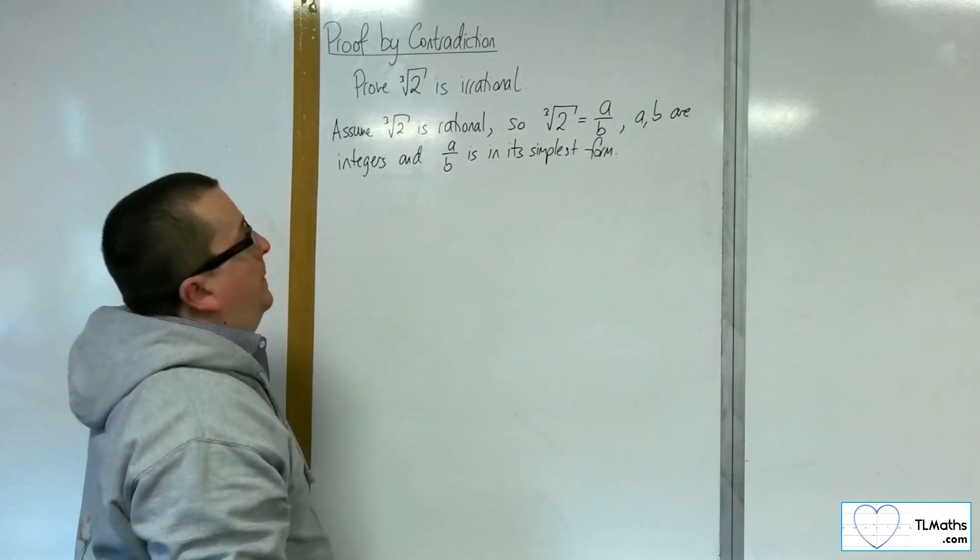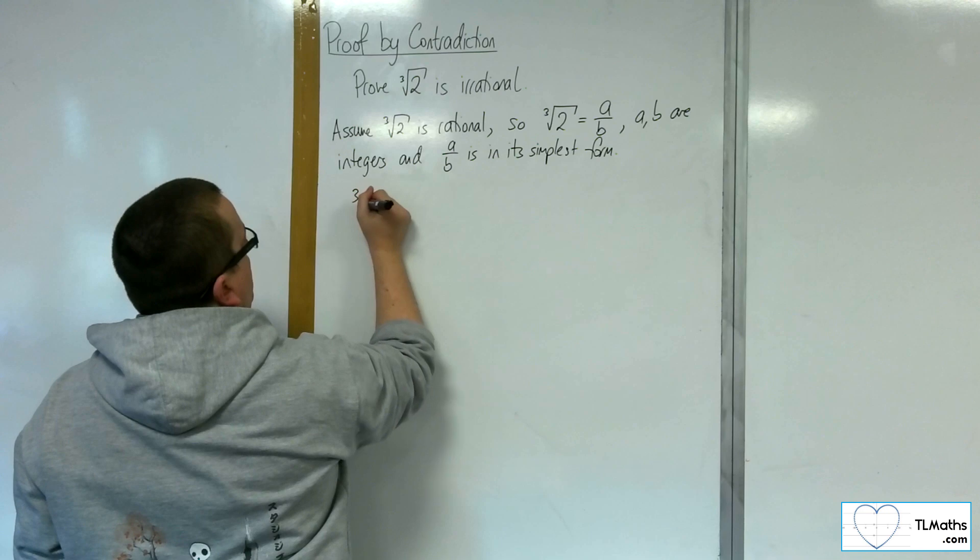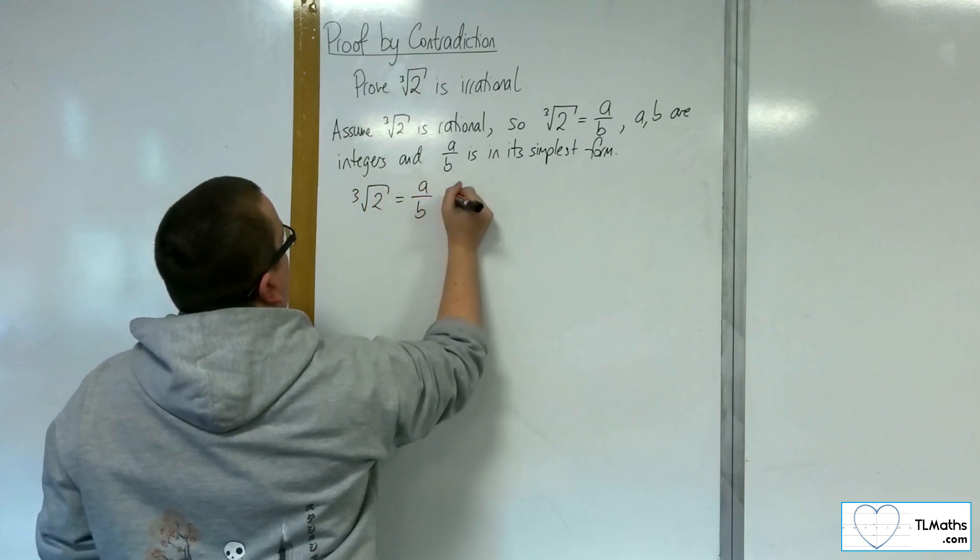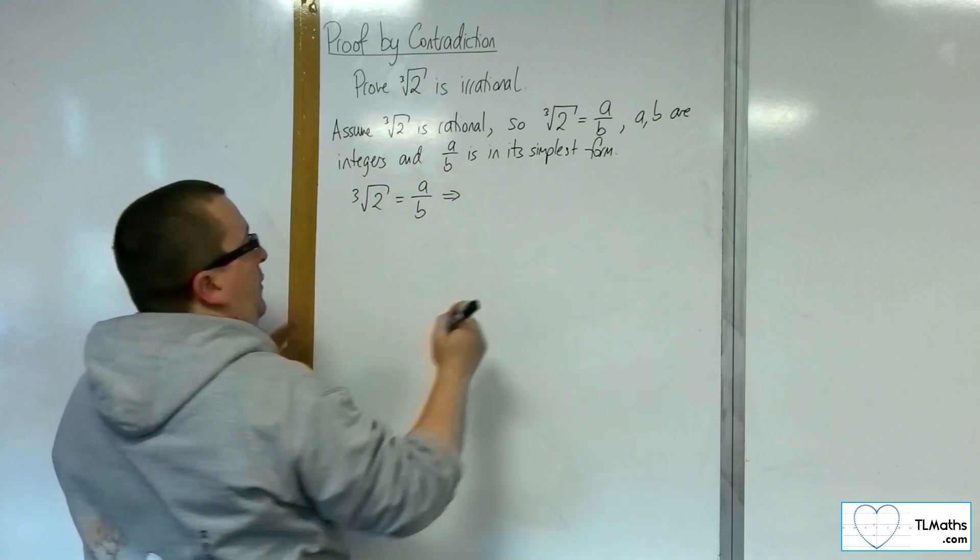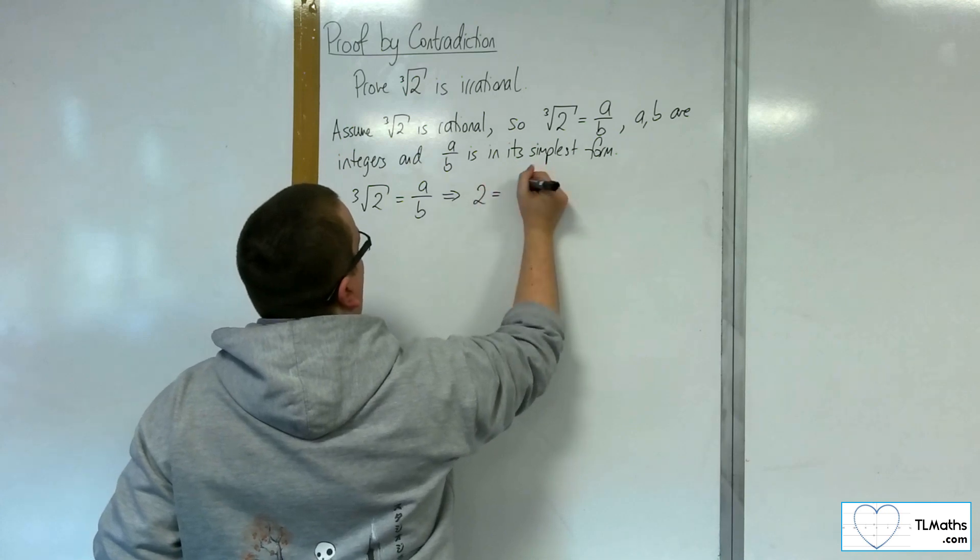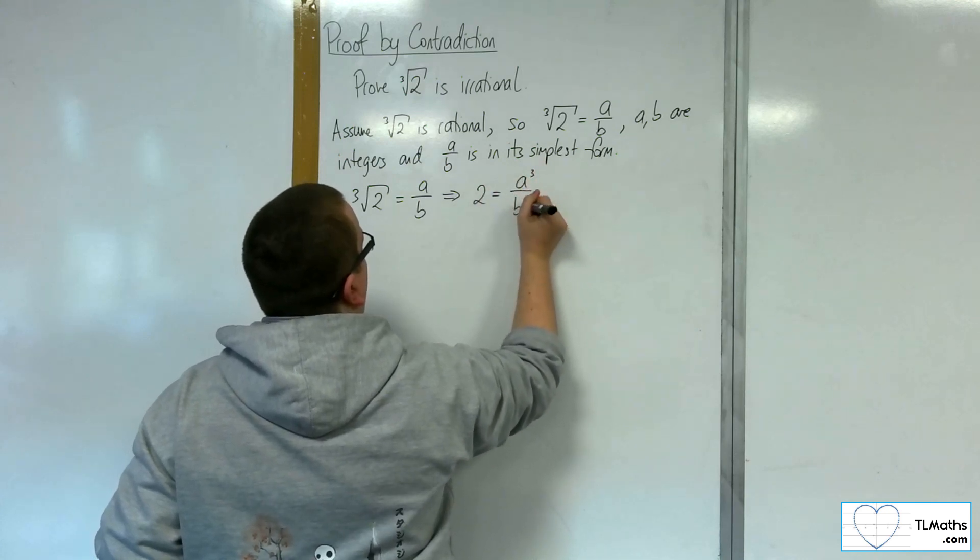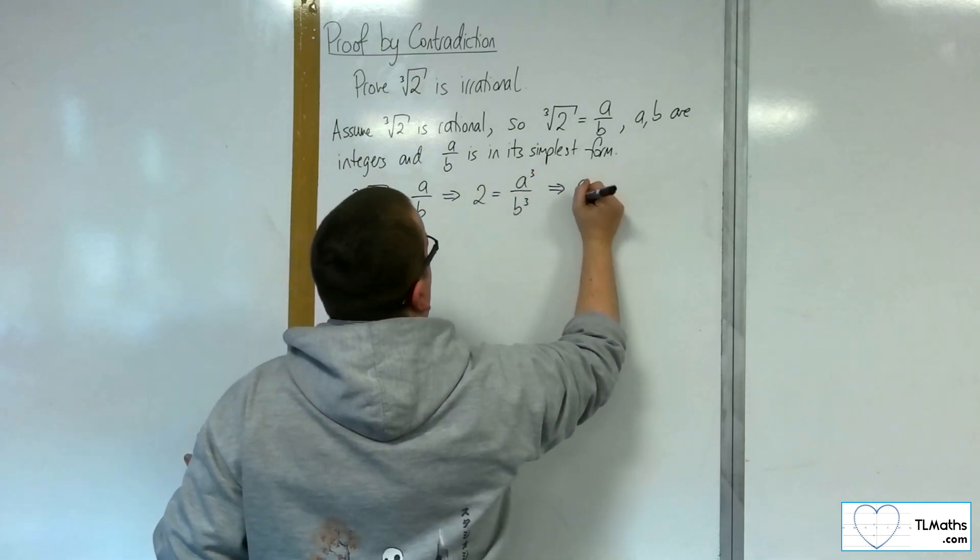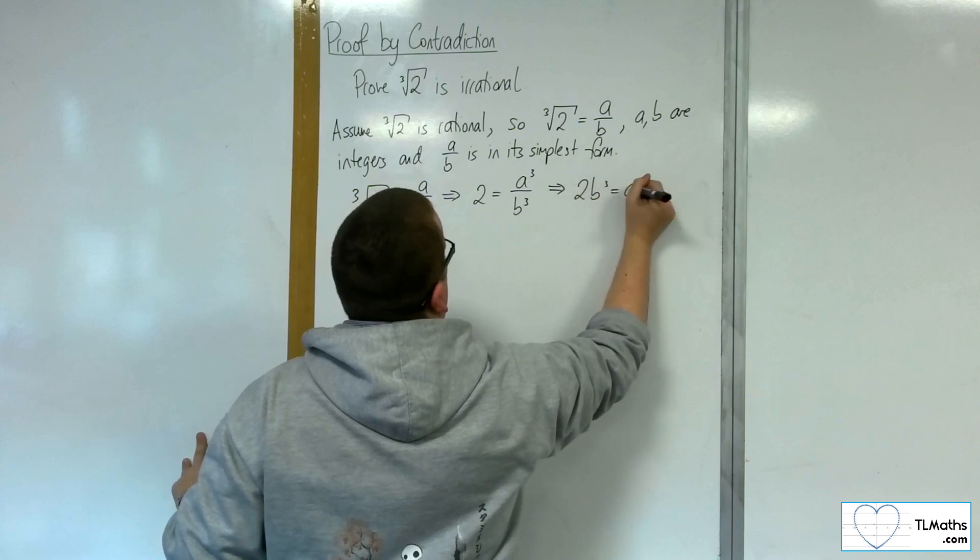OK, now if we take that cube root of 2 is equal to a over b, then we can cube both sides. So 2 is equal to a cubed over b cubed. And consequently, 2b cubed is a cubed.